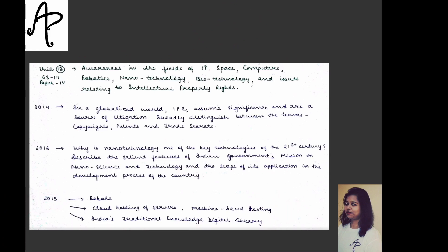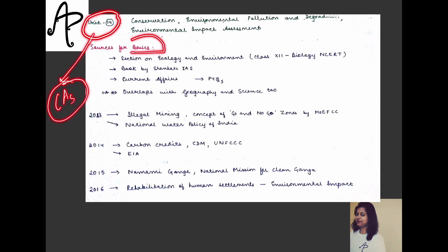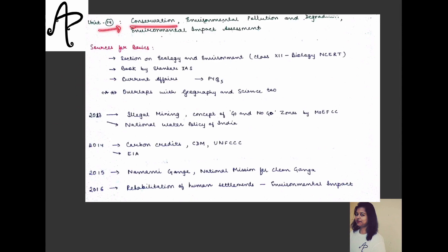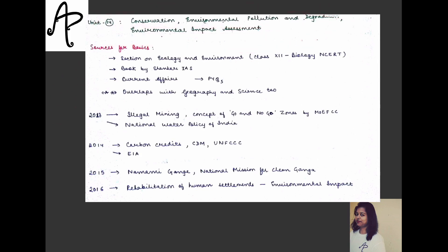That completes three sections on science and technology. There is just one unit given on environment — it appears small but is actually very lengthy. The basic skill you develop for prelims will also cover your basics for mains. The only heading given for environment is: conservation, environmental pollution and degradation, and environmental impact assessment — yet a lot more is covered within that. I am doing all things in detail in my environment and ecology series, with a dedicated playlist.